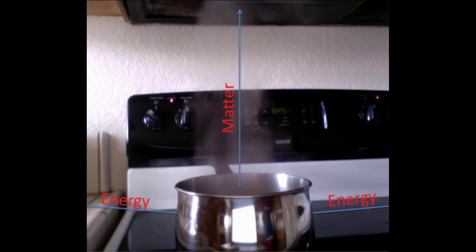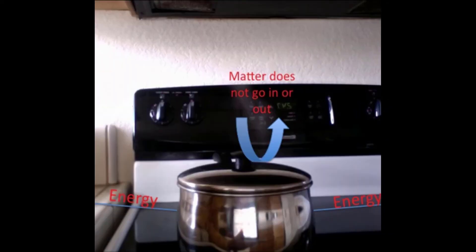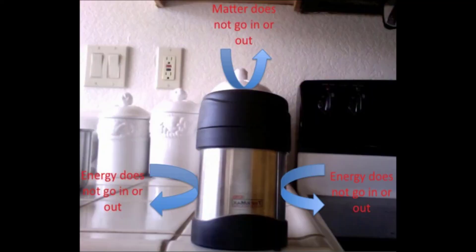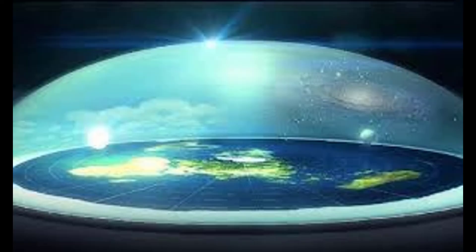We also need to distinguish between an open system, a closed system, and an isolated system. A classic example of all three: an open system is like a saucepan with no lid boiling soup; a closed system is like a saucepan with a lid boiling soup; and an isolated system is like a thermos with soup inside. The flat earth inside a glass dome would be a closed system because it still allows energy to exchange through the glass.